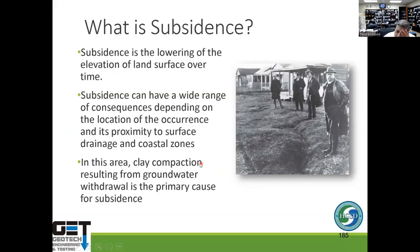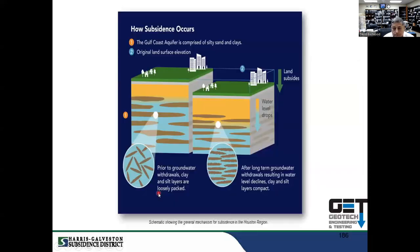Parts of the Houston area are subsiding because we're taking all this groundwater and oil from the ground, and when we do that, the ground starts going down. Subsidence is the lowering of the elevation of the land surface over time. In the Houston area, clay compaction resulting from groundwater withdrawal is the primary cause of subsidence. If you're digging holes and pumping oil out in Baytown, La Porte, and Pasadena, that causes subsidence as well. As we pump water out, the soils start collapsing and the ground starts dropping.